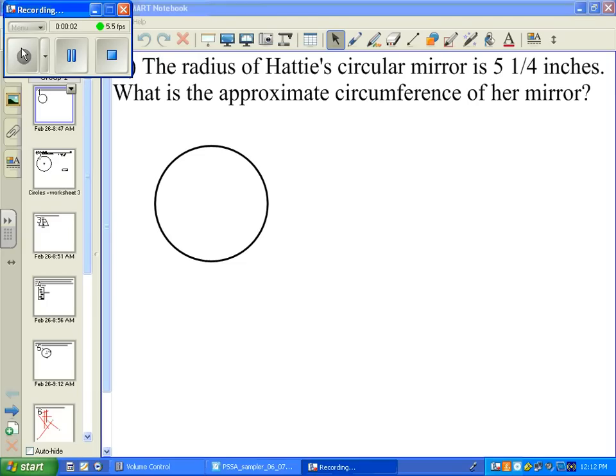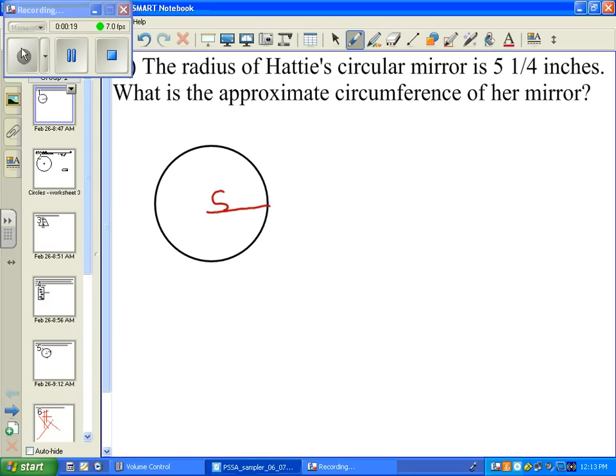This is number nine. The radius of Hattie's circular mirror is five and a quarter inches. What's the approximate circumference of this mirror? We're told this is five and we're told that the radius is five and a quarter inches.